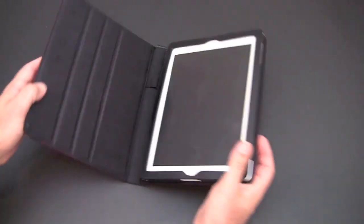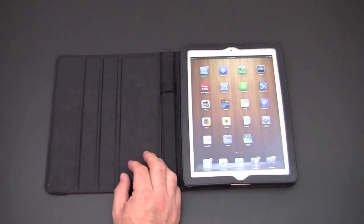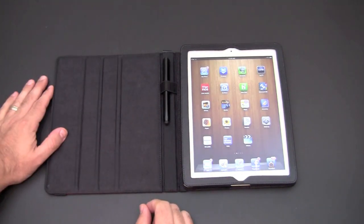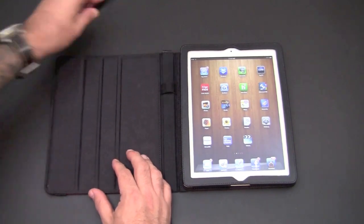So let's take a look at the inside of the case. There is a little loop right here which you could take a stylus and place inside or a pen or anything else you so desire, but you can keep that stylus right there.